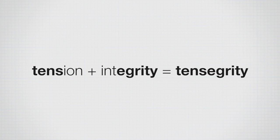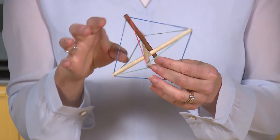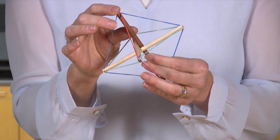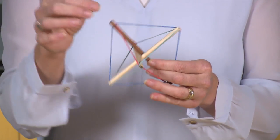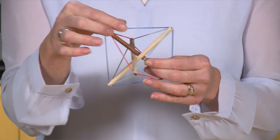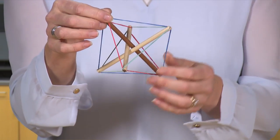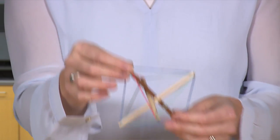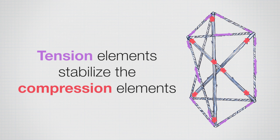In a tensegrity structure we have compression elements — in this case wooden dowels, but it could also be metal rods — and then tension elements such as these rubber bands, or also ropes or cables. The tensile forces in the ropes and cables or rubber bands stabilize the compression elements, and that's what allows it to support loads.